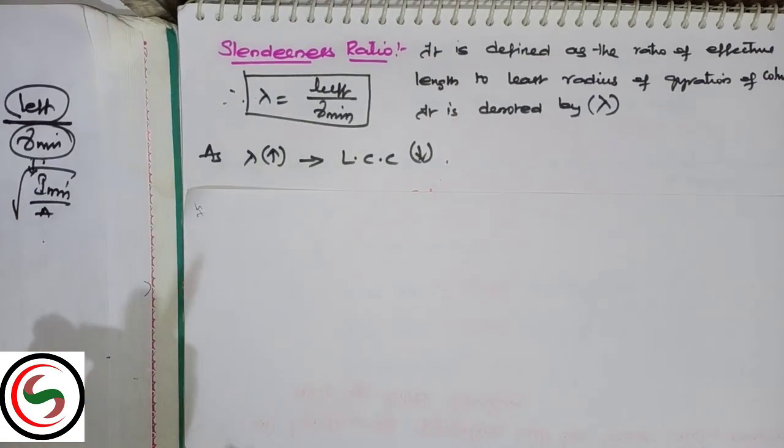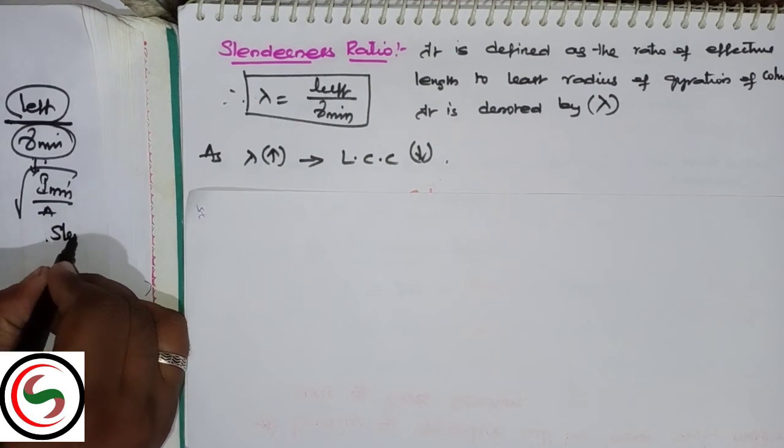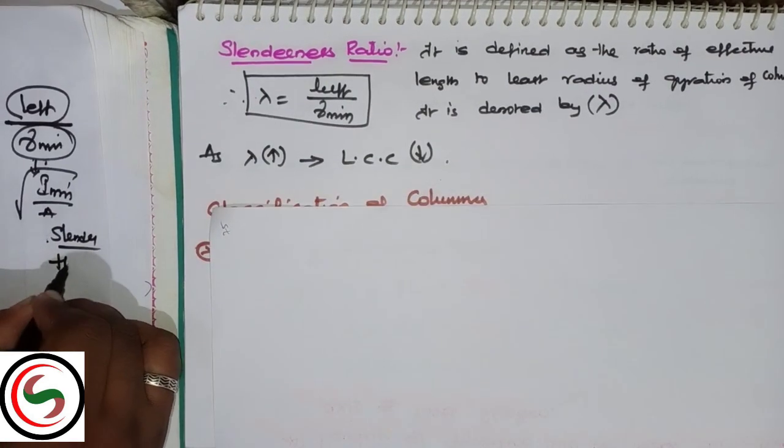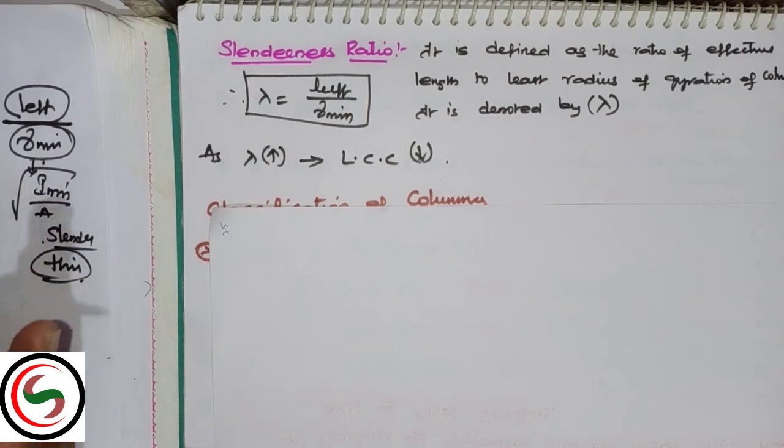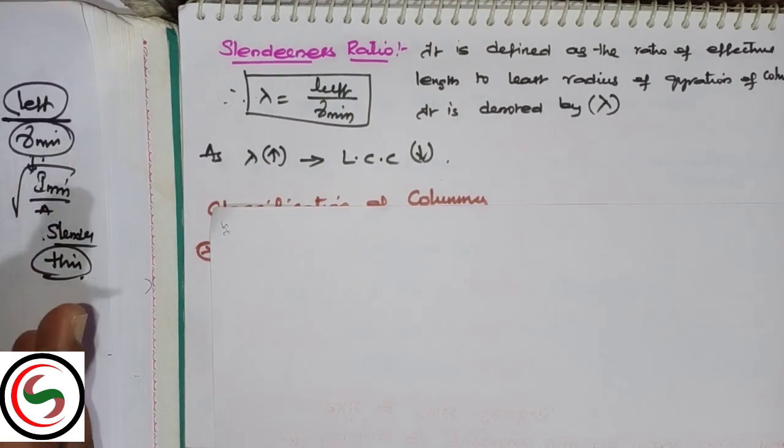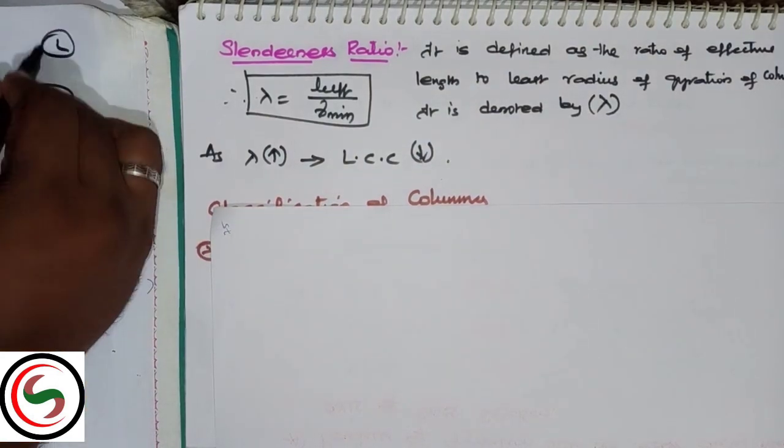Our column strength mainly depends on the slenderness ratio. As slenderness ratio increases, the load carrying capacity decreases. Slender means thin, so a long column is slender.